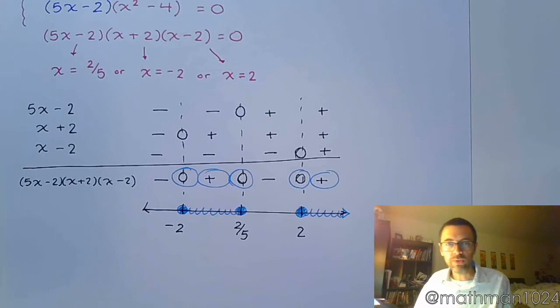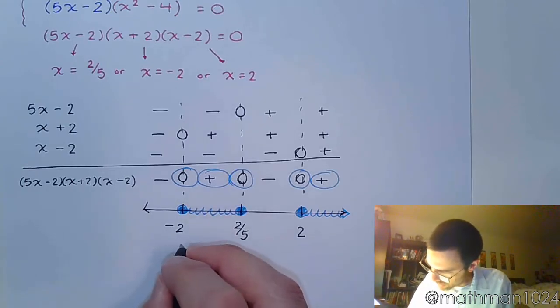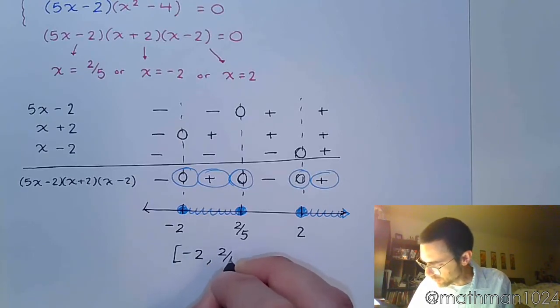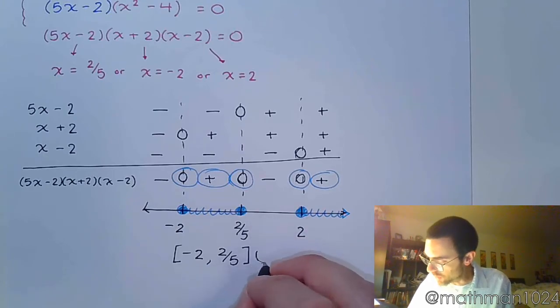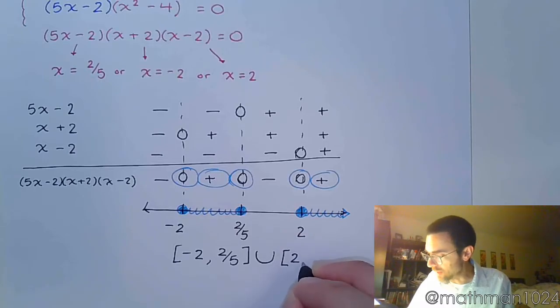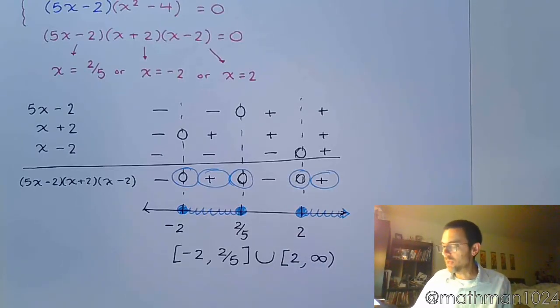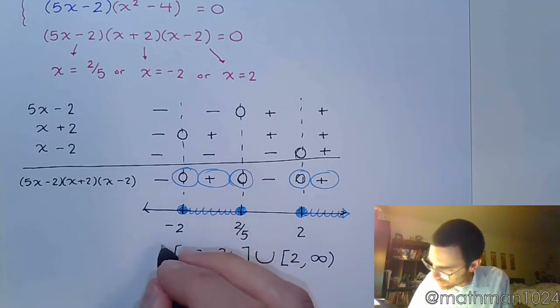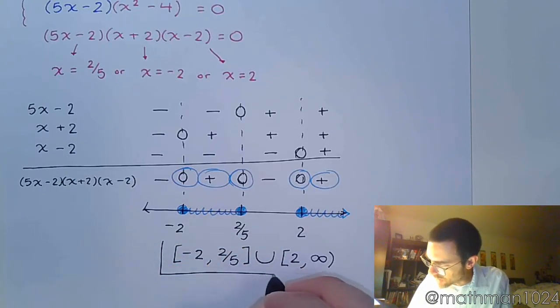Alright, so our interval notation is going to be bracket negative 2 to 2/5 bracket. You've got a gap here, so we're going to use the union sign, brackets, and then 2 going all the way to the right toward infinity like this. And yeah, that is our answer.